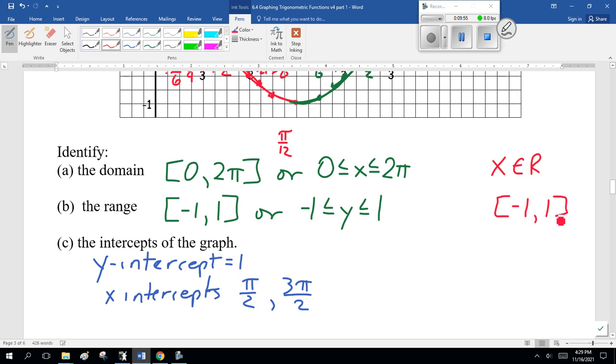And, we'll continue here. Minus 1 to 1 for the range. Now, the intercepts. Y-intercept, this one. But, we have to come up with a general formula for the x-intercepts. That would be pi over 2 plus n pi, where n is an integer. Now, that's what I expect you to be able to do.